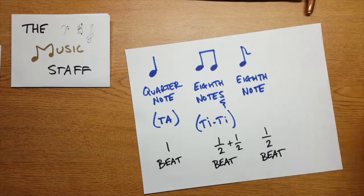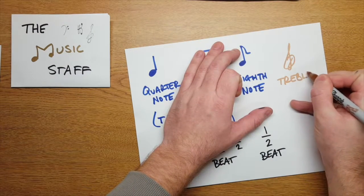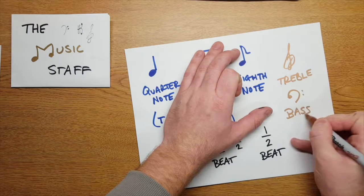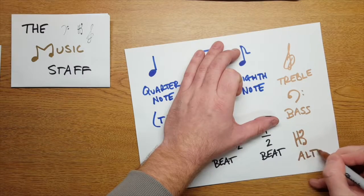These are the clefs used by string instruments. Treble clef is for high instruments like violin. Bass clef is for low instruments like double bass or cello. An alto clef is in the middle. It's what the viola players read.